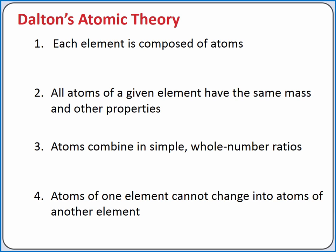First, each element is composed of tiny indestructible particles called atoms. Second, all atoms of a given element have the same mass and other properties that distinguish them from the atoms of other elements. Third, atoms combine in simple whole number ratios to produce compounds.